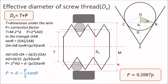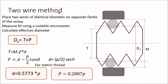To summarize the procedure: place two wires of identical diameter on opposite sides — the diameter is calculated using D = (P/2) · sec θ; choose wires of that diameter from the available set. Then measure M using a suitable micrometer. Calculate effective diameter as T plus P, where T = M − 2D and P = D − (P/2) · tan θ. For metric threads, D = 0.5773P and the correction factor P = 0.2887P. In this way you can determine the effective diameter of a screw thread using the two wire method.